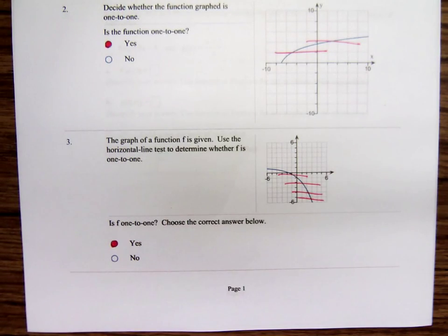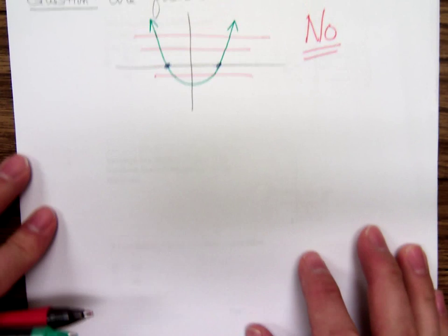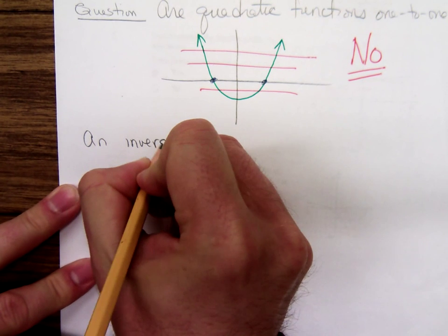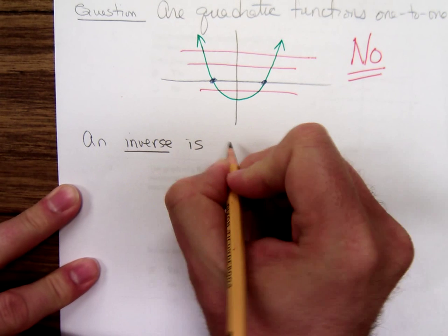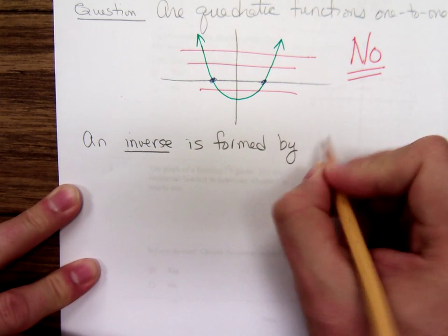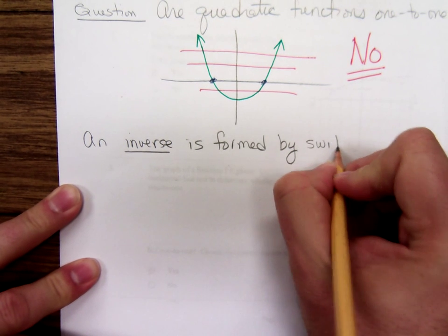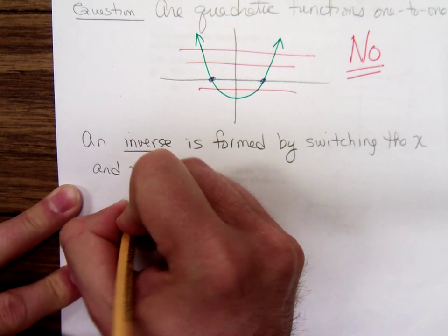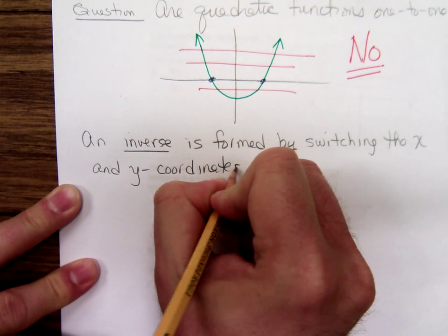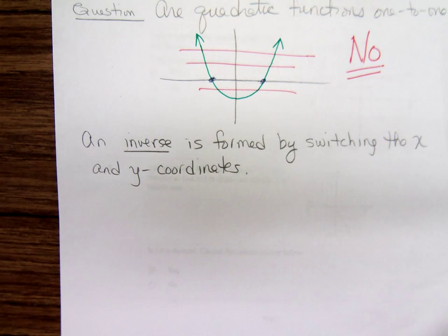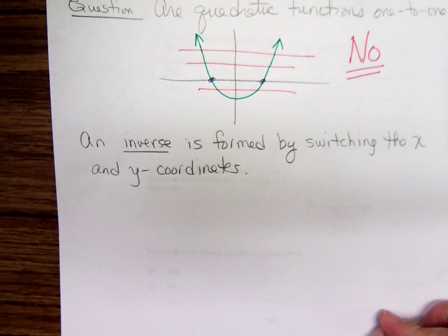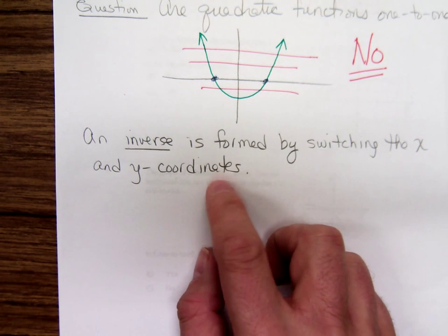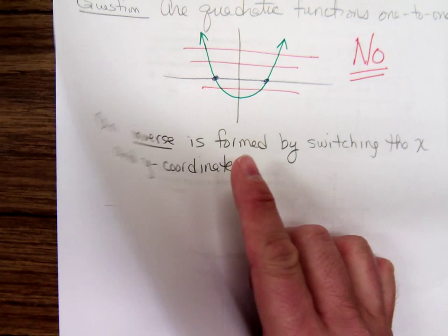Here's some more terminology. An inverse is formed by interchanging, or switching, the x and y values of a function. An inverse is formed by switching the x and y coordinates. This is not a very formal definition — it's a very casual definition. We'll define inverses much more formally in a little bit.